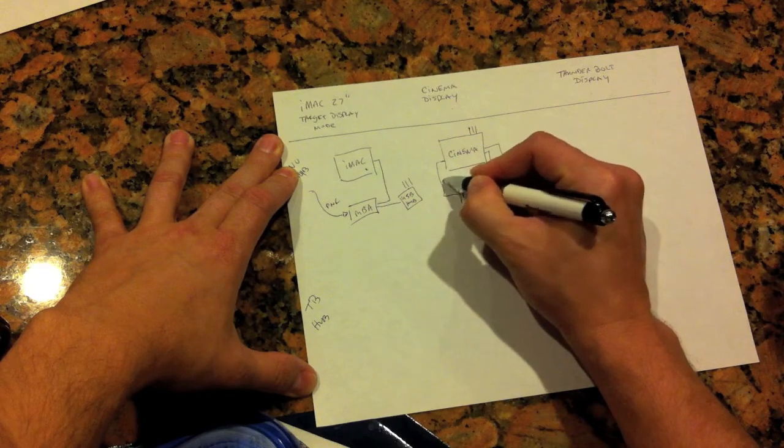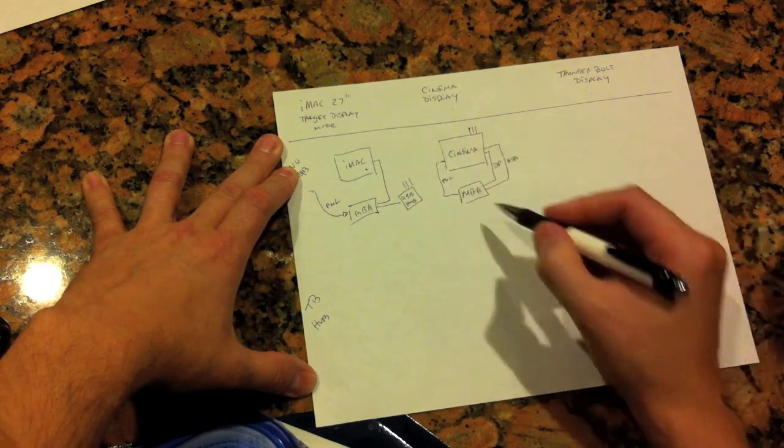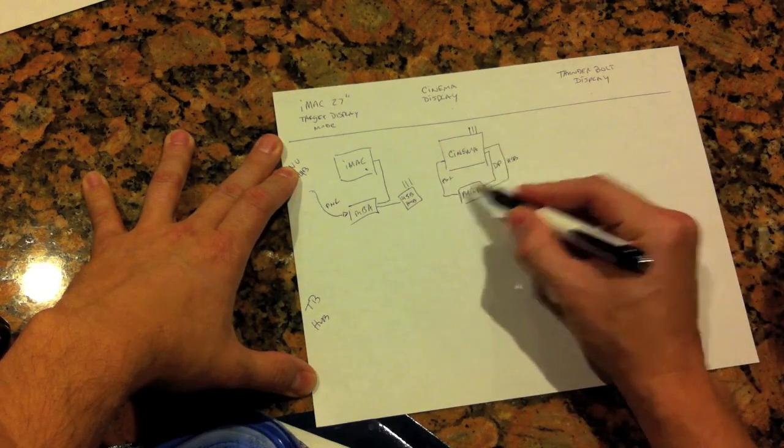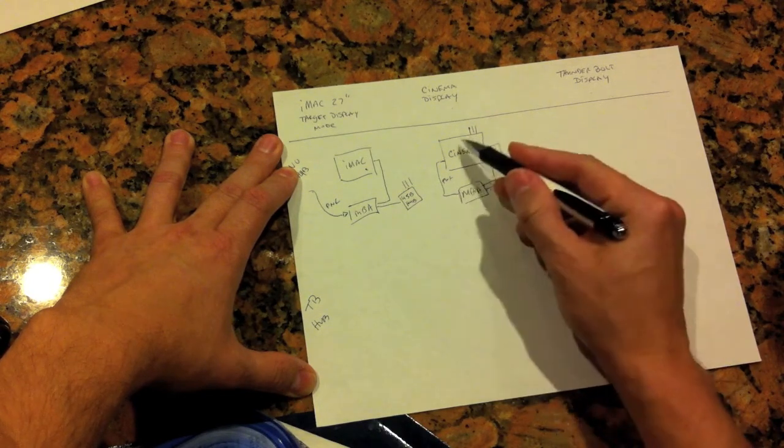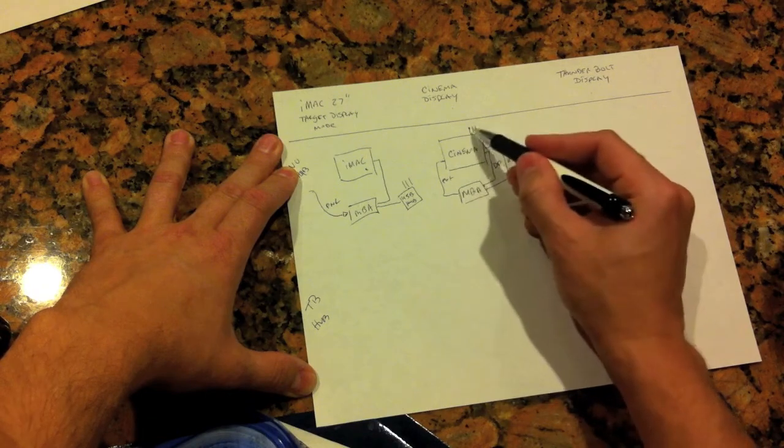It also has an integrated power cable, so it's a nice solution, but you still have three points of connections on the MacBook Air: one for the DisplayPort, one for the USB to activate the iSight and this hub back here, plus the power cable.